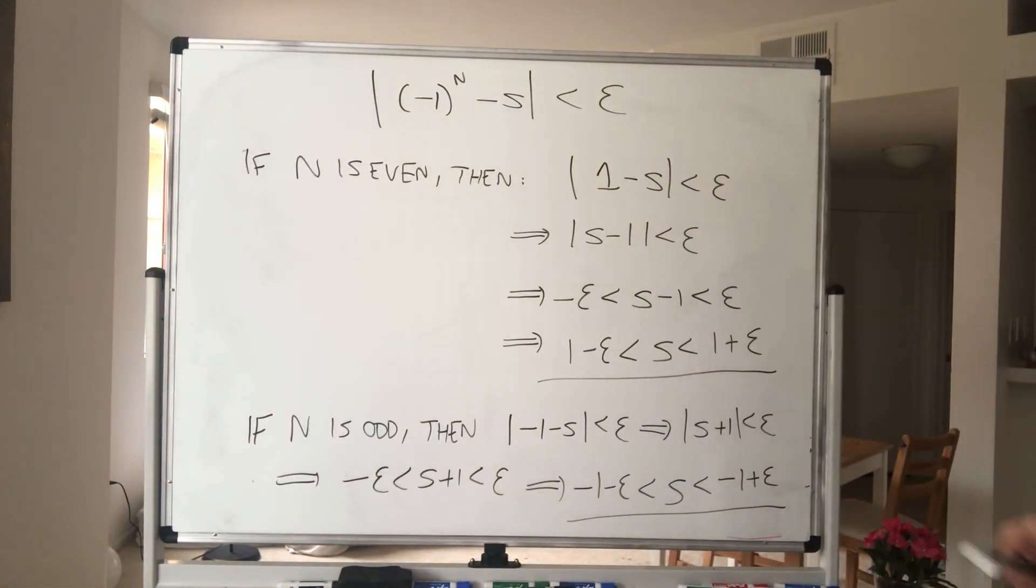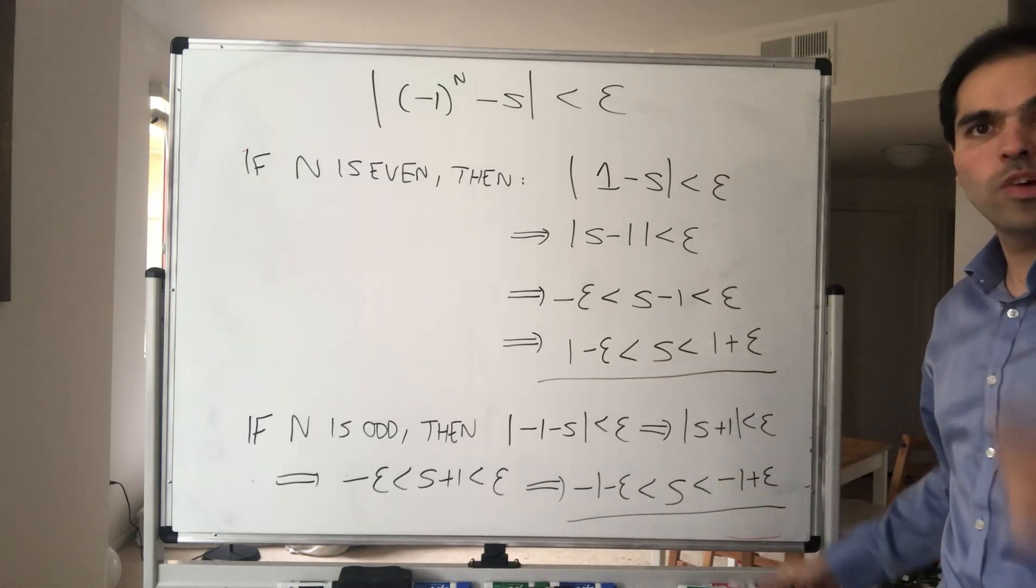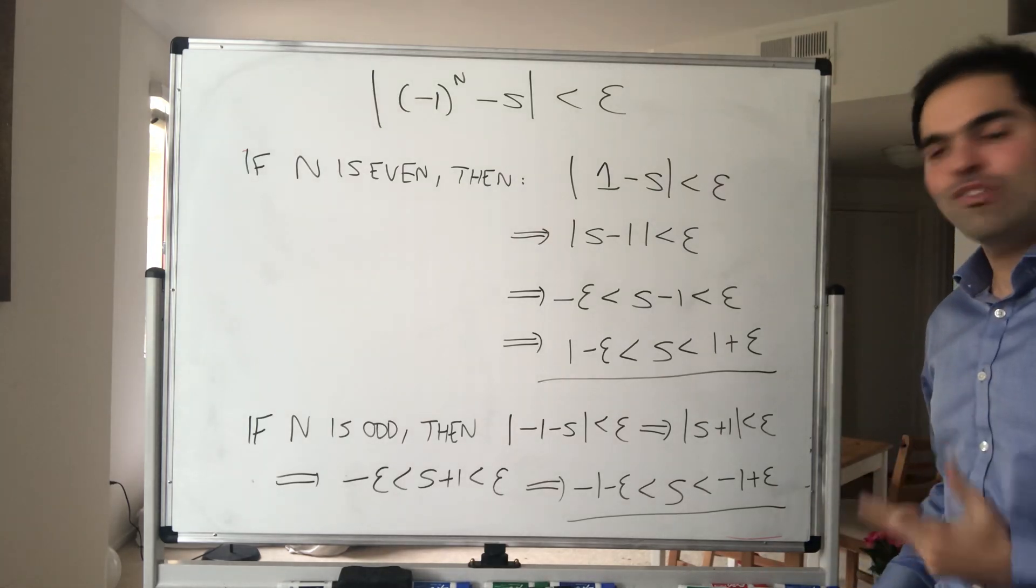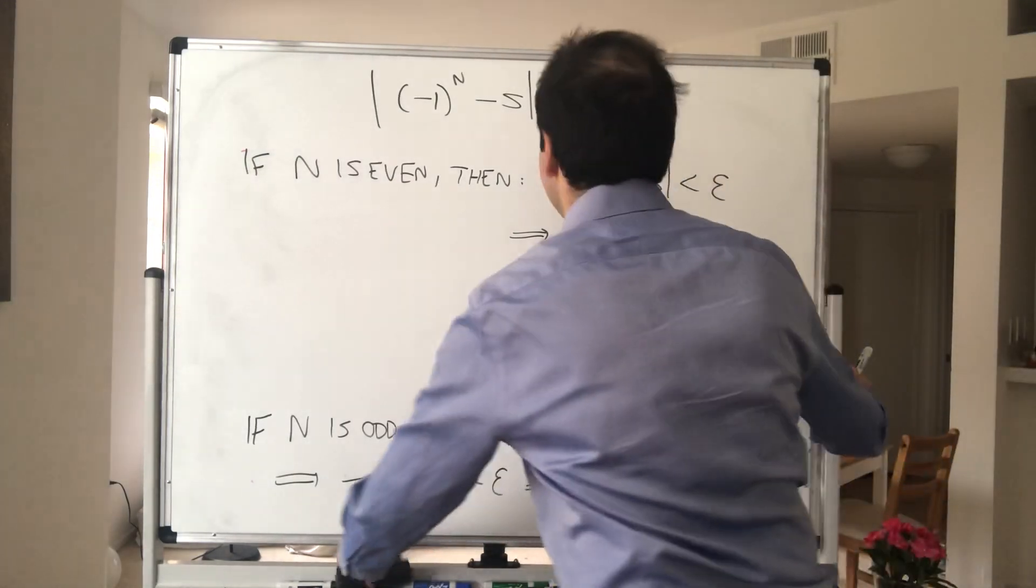So we have two things. On the one hand, s is close to 1, and on the other hand, s is close to -1. And now what we want to do, we want to pick a very smart value for epsilon to actually give us a contradiction.